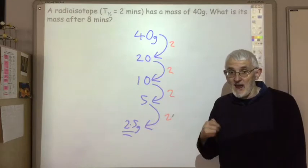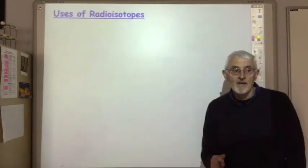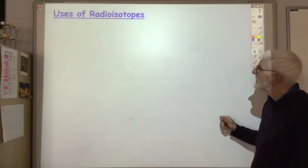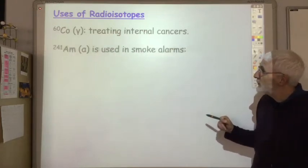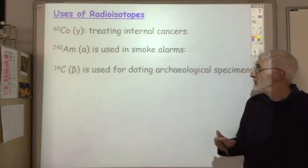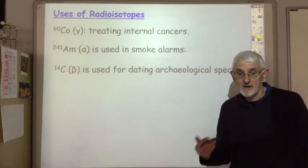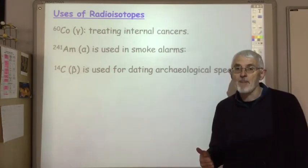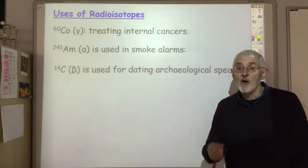There are various ways questions about half-lives can be asked, so it's worth practising some of them. Now let's look at the uses of radioisotopes — you should be able to remember some of these. Cobalt-60 is a gamma emitter and is used for treating internal cancers. Americium-241 is an alpha emitter and is used in smoke alarms. Carbon-14 is a beta emitter and is used for dating archaeological specimens. In an exam question, if asked to assess the suitability of a radioisotope for a particular use, the two things to consider are: the type of radiation being emitted (remembering its penetrating power), and the length of the half-life — whether you want the radioisotope to exist for a short or long time.